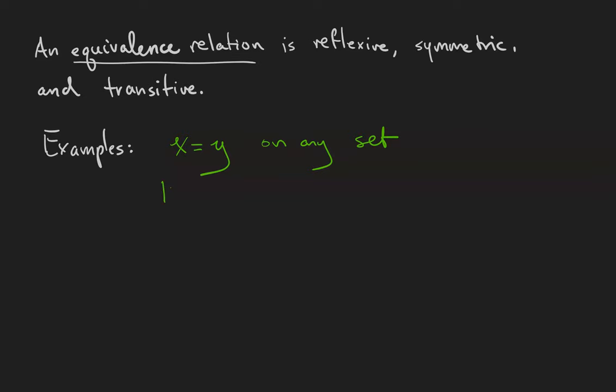Less common are the relations generated by the statements the cardinality of x is equal to the cardinality of y on a family of sets. In other words, we call two sets equivalent if they have the same size. And earlier in these videos we saw the relation of logical equivalence between two statements.